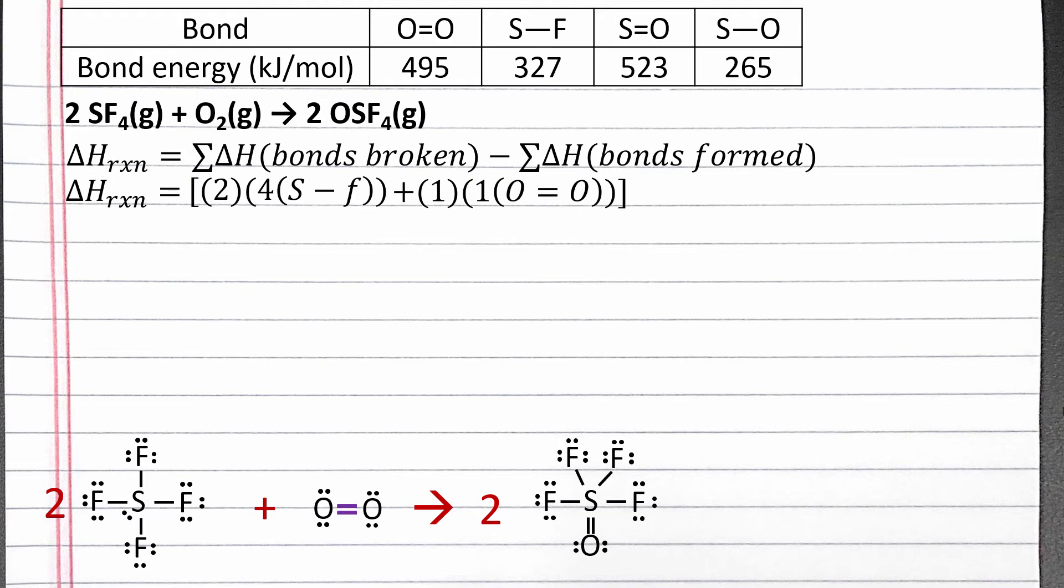That's all of our reactants. Next, we need to make the bonds of our products. We have two OSF4 molecules, and each OSF4 has four sulfur-fluorine single bonds and one sulfur-oxygen double bond. Notice that the two out front is applied to both four sulfur-fluorine single bonds and one sulfur-oxygen double bond, so we've used parentheses correctly.